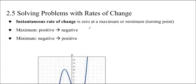So before we do that, you have to know that the instantaneous rate of change is 0 whenever we have a maximum or a minimum. These are called turning points, and so if you have a turning point, you'll know that the instantaneous rate of change is 0.